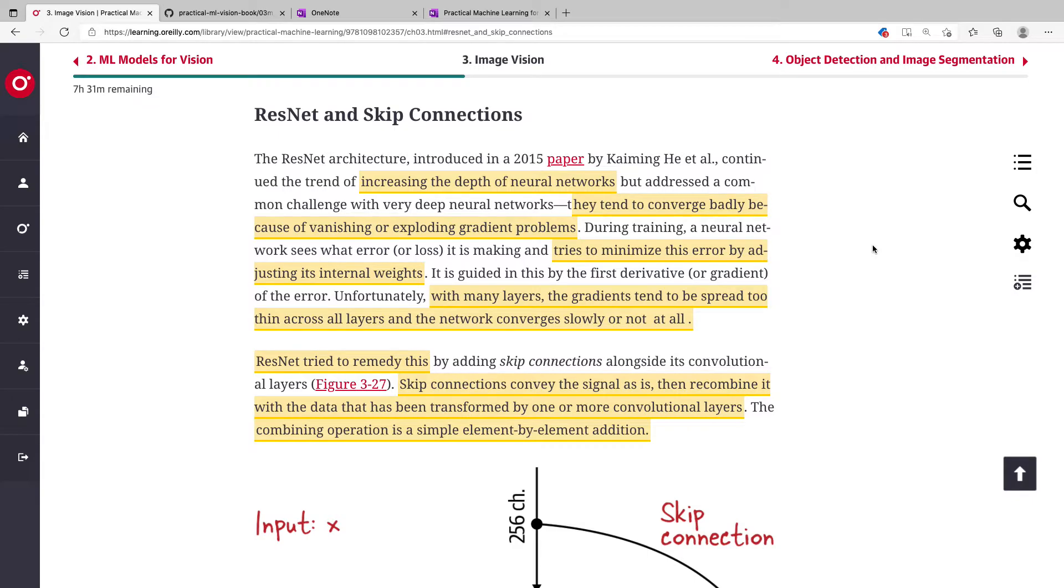Today we'll be looking at skip connections. If you're a deep learning researcher, you must have heard about the ResNet architecture. The key concept in the ResNet architecture comes from the skip modules. Now, what is the intuition behind this?